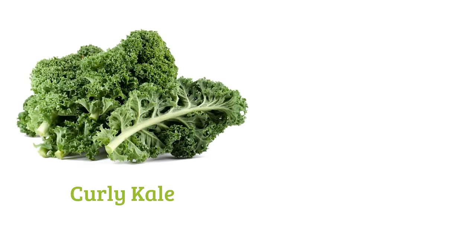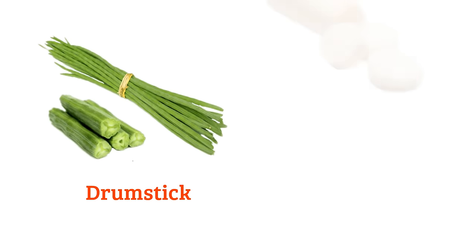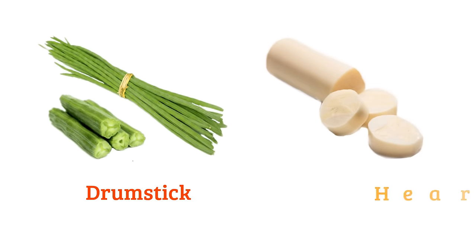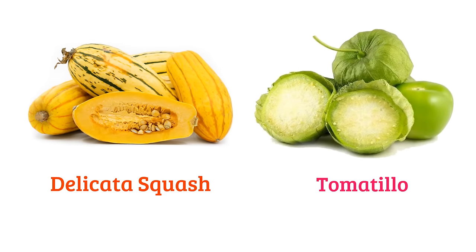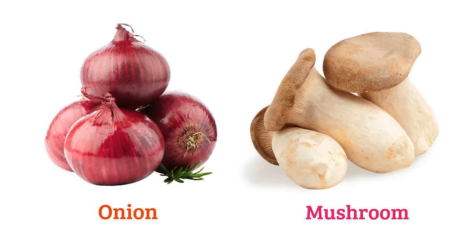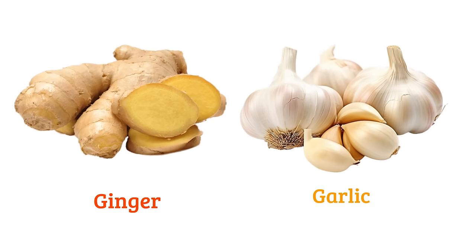Curly kale, pea, drumstick, heart of palm. Delicata squash, tomato, onion, mushroom, ginger, garlic.